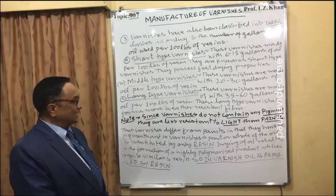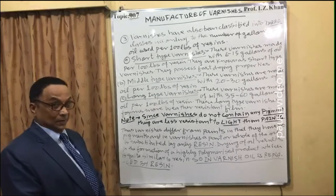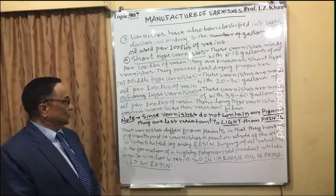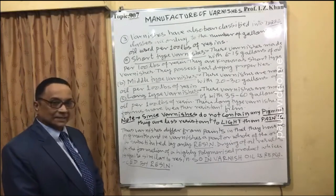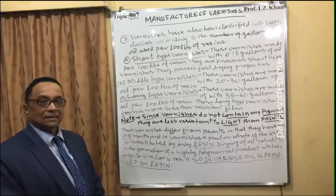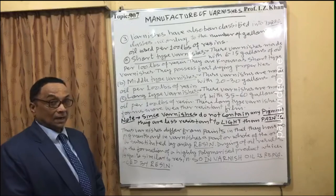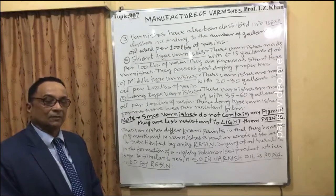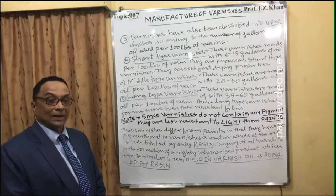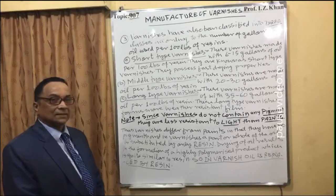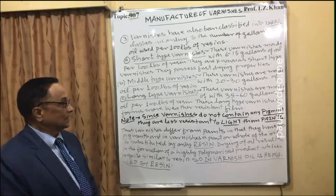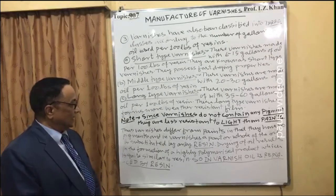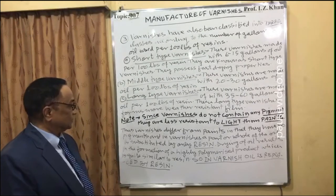Note: since varnishes do not contain any pigment, they are less resistant to light than paints. Paints are very resistant to light because pigments are responsible for reflecting or absorbing different wavelengths of light. Since varnishes have no pigment, they are not light resistant. Thus varnishes differ from paints in that they have no pigments, and in varnishes a part or the whole of the oil is substituted by resin.